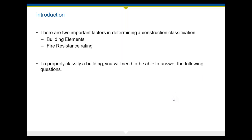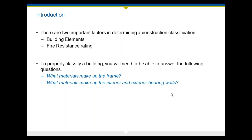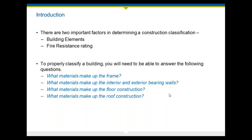In order to properly classify a building, you have to answer the following questions — and this is not subjective. You're not going to convince an underwriter of one thing or another; there is a right answer for each building. What materials make up the frame of the building? What materials make up the interior and exterior walls? Sometimes there are multiple materials in the same wall. What materials make up the floor construction? What materials make up the roof construction? And what is the fire rating of these materials? The fire rating is really just resistance to fire — from no fire rating to less than an hour, less than two hours, and so on.